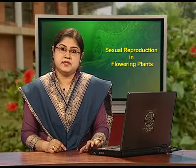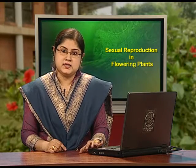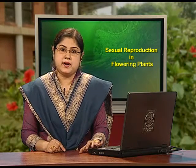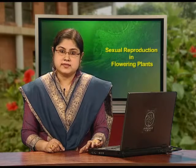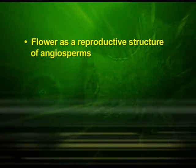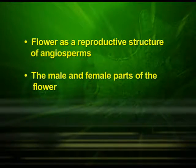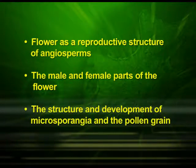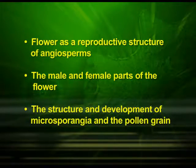We have divided this chapter in four parts. In the first part, we will discuss about flower as a reproductive structure of angiosperms, the male and female parts of the flower, the structure and development of microsporangia and the pollen grain.